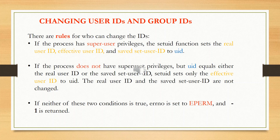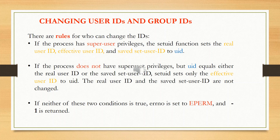Recalling the three rules for changing user IDs: if the process has super user privileges, the setuid function sets the real user ID, effective user ID, and saved user ID to UID. If the process does not have super user privileges but UID equals either the real user ID or the saved user ID, setuid sets only the effective user ID to UID. If neither condition is true, the error number is set to EPERM and an error is returned.